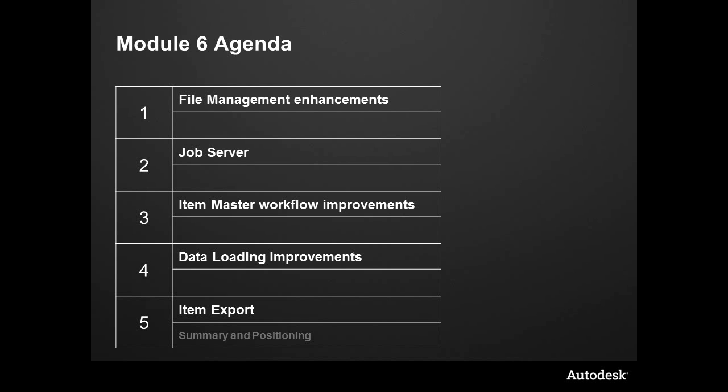We're going to cover some of the new file management and file resolution enhancements that we've made. We'll revisit the job server — something we looked at a little bit earlier in enabling — and take a deep dive into what that is. We're going to look at some item master workflow improvements, some new improvements in data loading, and the ability to export items and integrate with upstream systems.